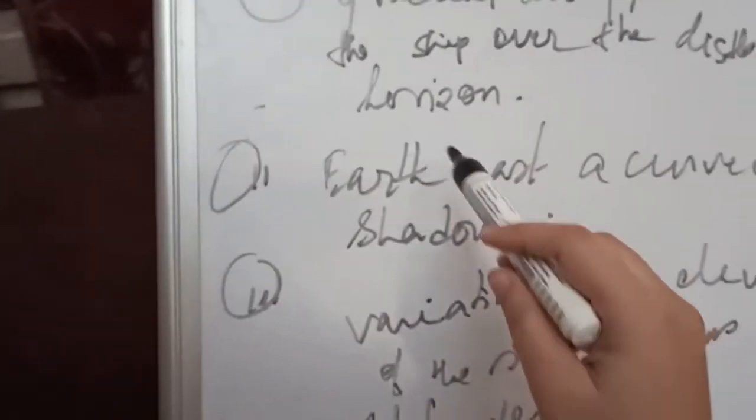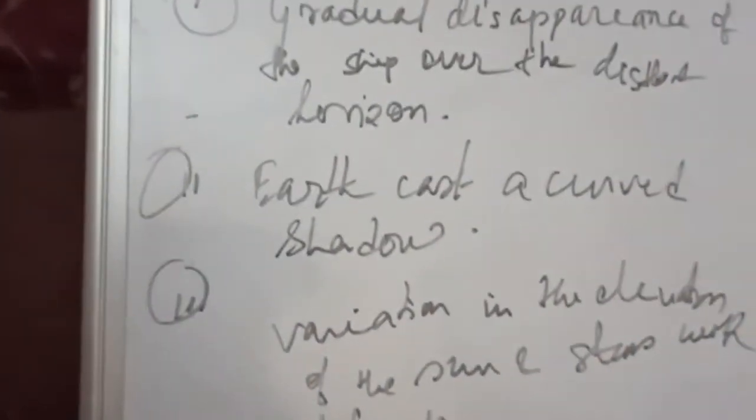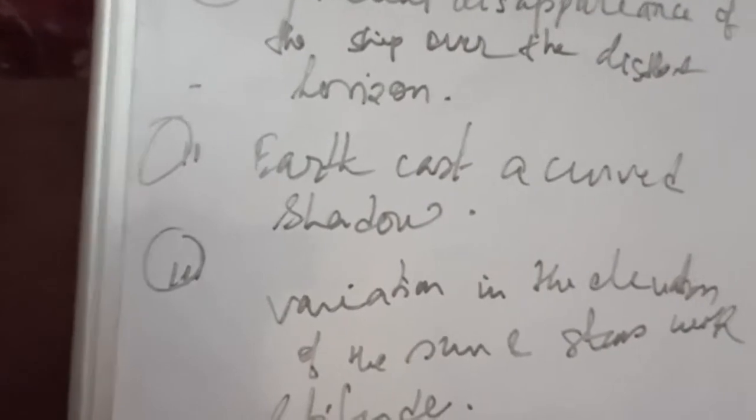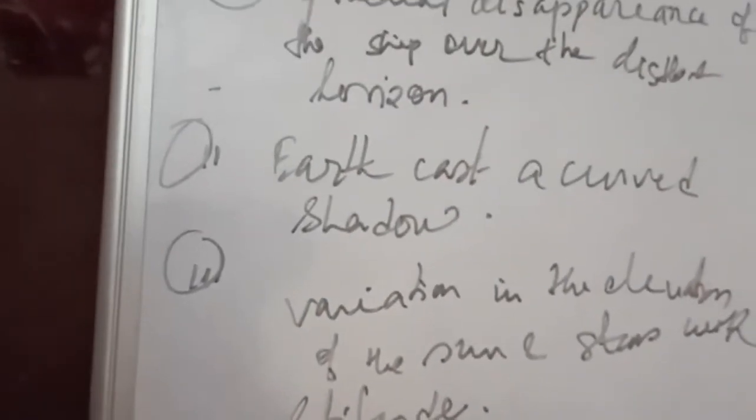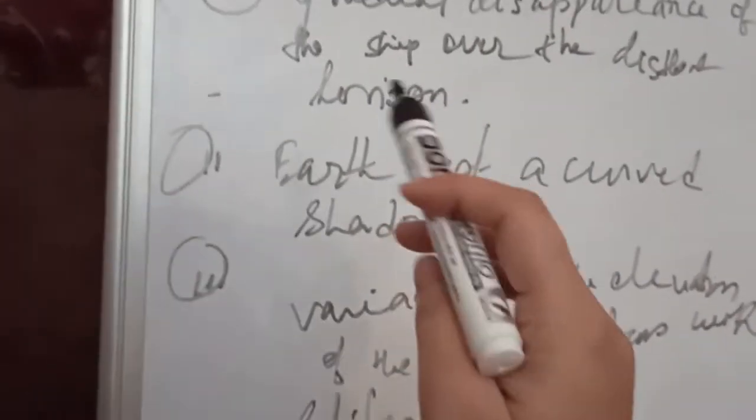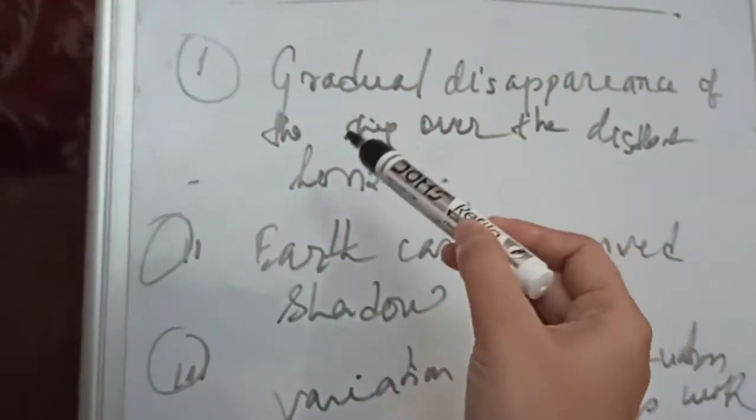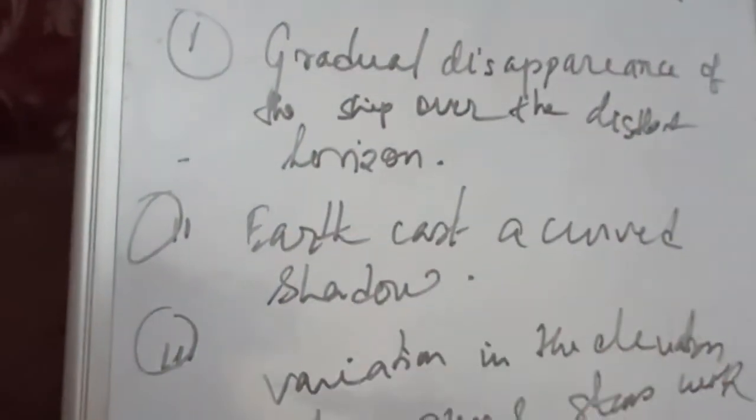Based on these three observations, Aristotle first declared that the Earth was a large sphere or a round, sphere-like object. I'm going to go into details of these three observations.